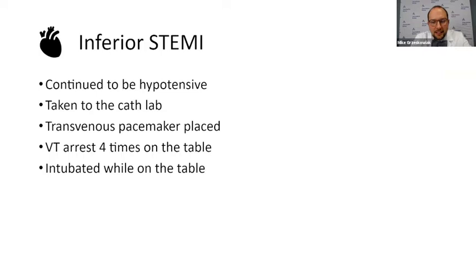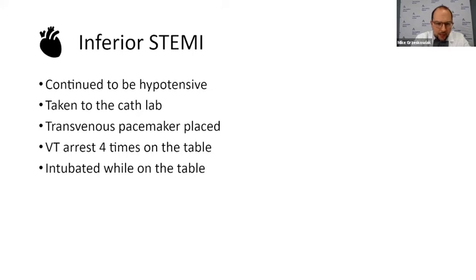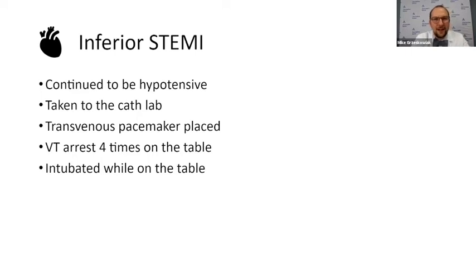When he came into the ED, we took him straight to the cath lab. For patients that are bradycardic with an inferior STEMI, we always place a transvenous pacemaker because they're very unstable and it's easy for them to go into heart block. While placing the pacemaker, he went into VT/VF. We shocked him out of it, he coded again with VT/VF, we shocked him out again, finally placed the pacemaker. Then getting our catheters up to shoot the coronaries, VT again. We called for a seizure consult because he was altered. He coded again, and we intubated him. Finally, after what seemed like a lifetime, we were able to shoot his coronaries.